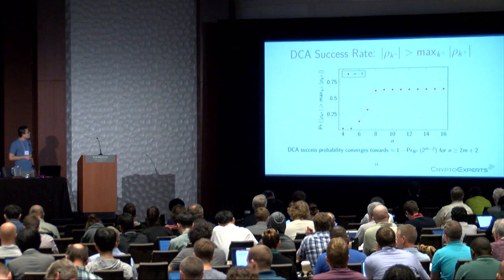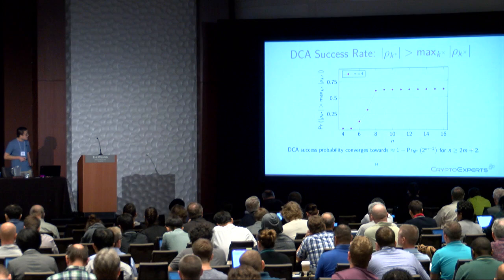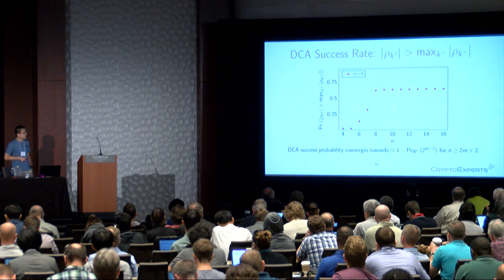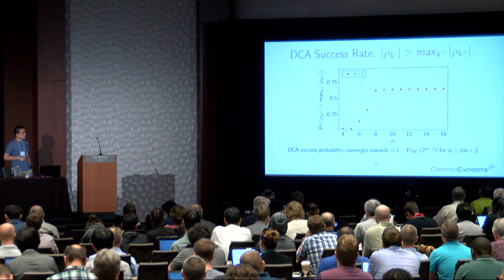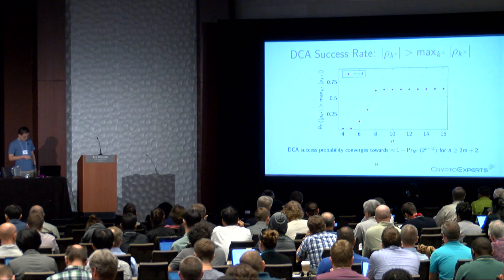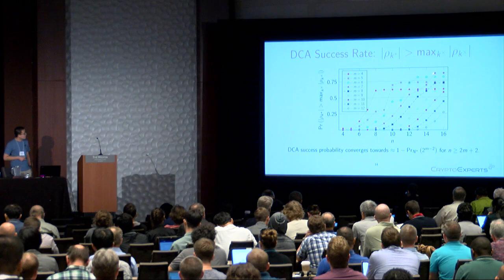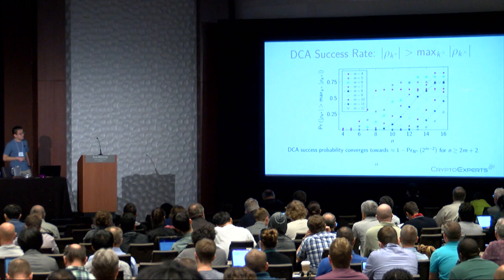We also have a closed formula for the success probability. Here m is the output bit size and n is the input bit size for the selection function. When attacking, we have flexibility to choose n. If we increase n up to 2m+2, the success probability converges. Interestingly, if we increase the encoding size, we actually have a higher chance of breaking the implementation — meaning a wider encoding is not necessarily more secure.